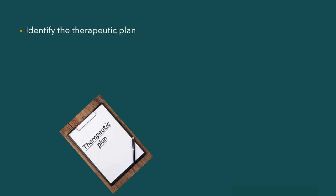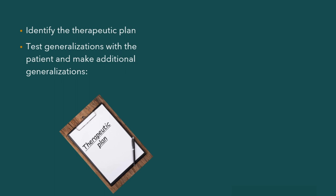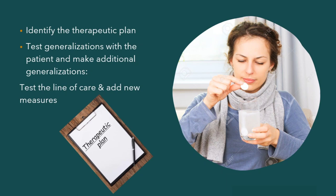Then test generalizations with the patient and make additional generalizations. It's time to test the line of care decided after looking into other patients' similar problems. If we find something special in this patient, we have to add new measures. For example, many patients come with a headache and most get aspirin, but if a patient is also allergic to aspirin, we have to think of something else — we cannot give him aspirin.